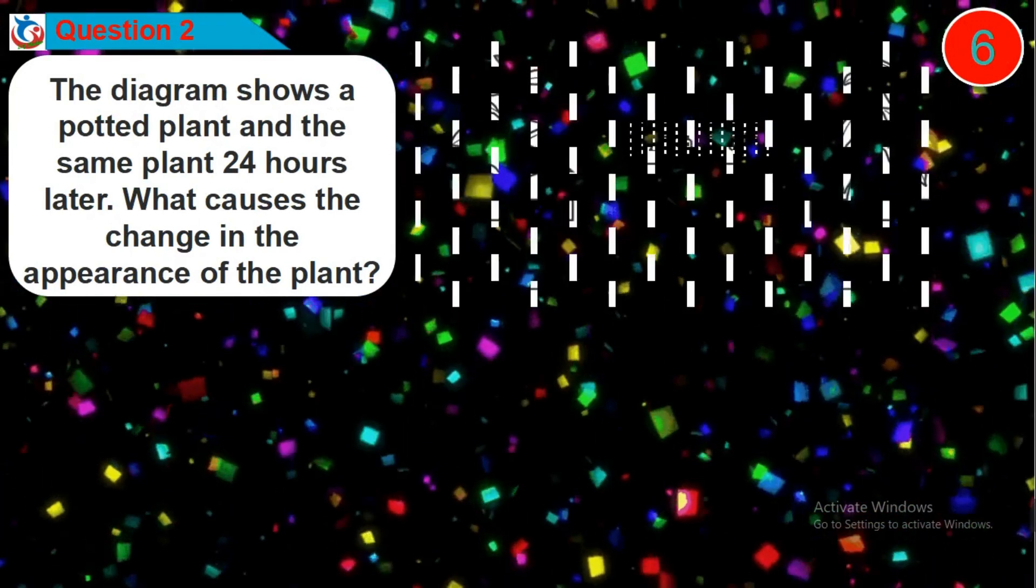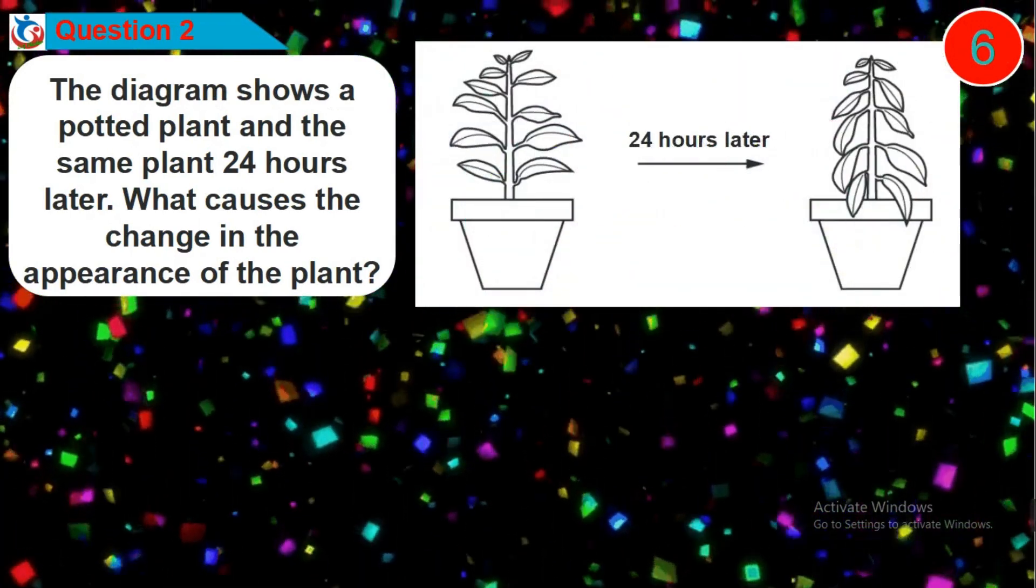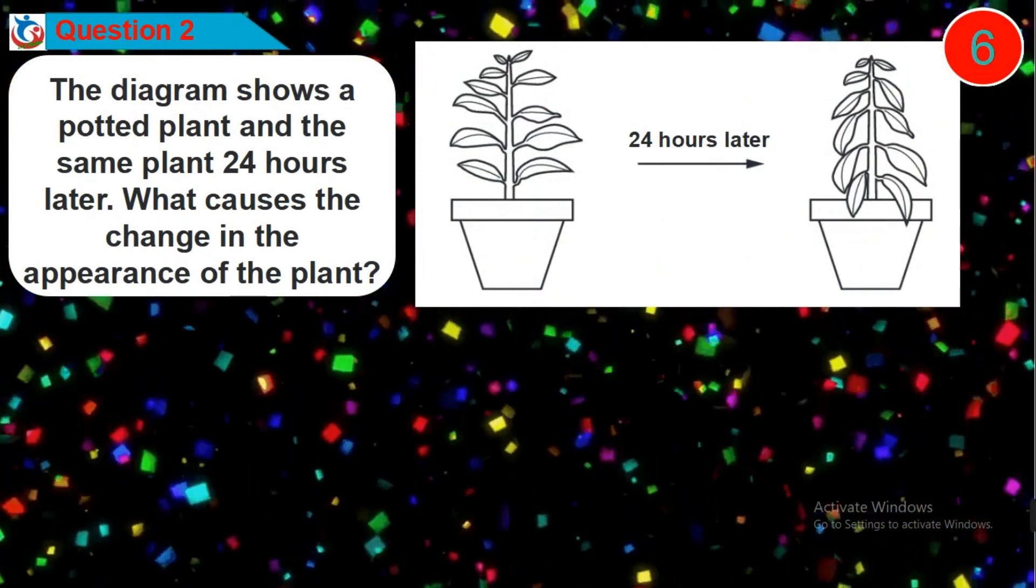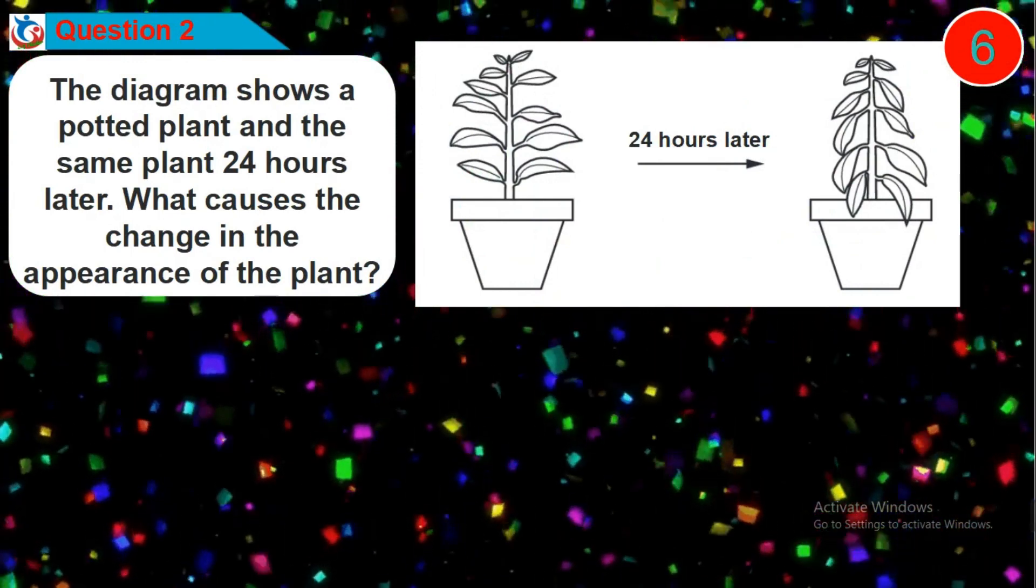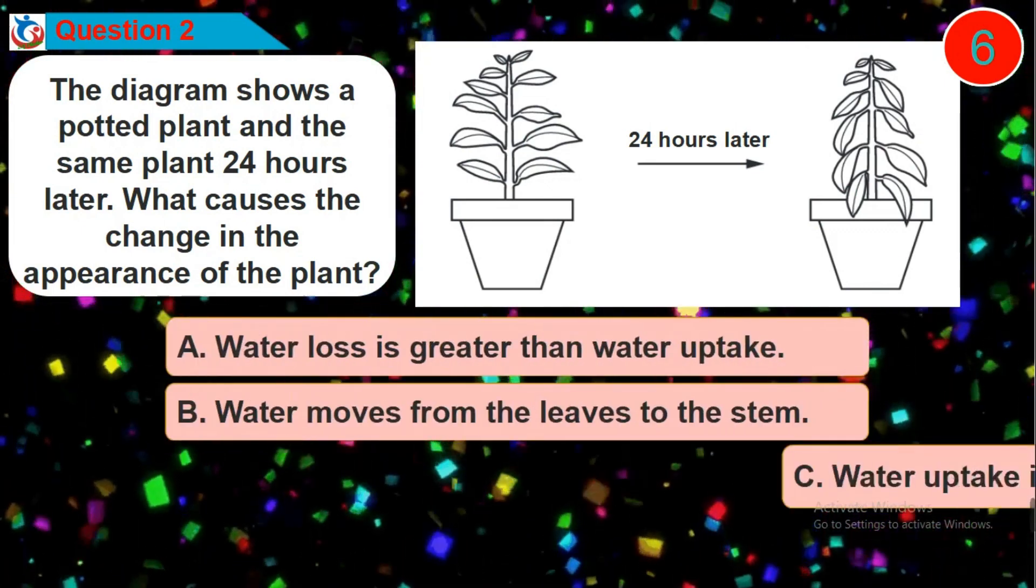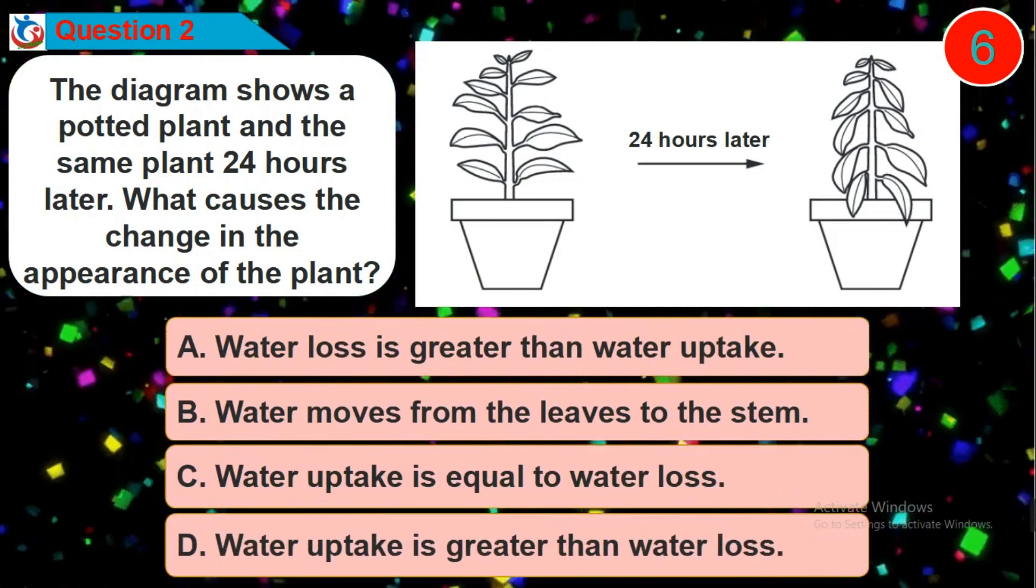Question 2. The diagram shows a potted plant and the same plant 24 hours later. What causes the change in the appearance of the plant? Is it option A, B, C or D?